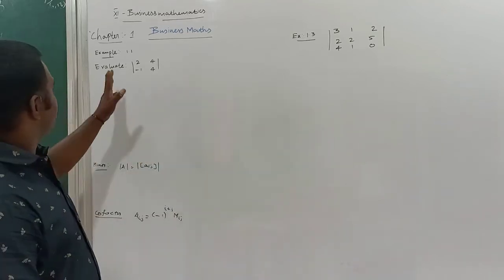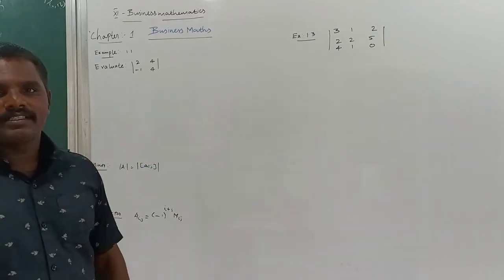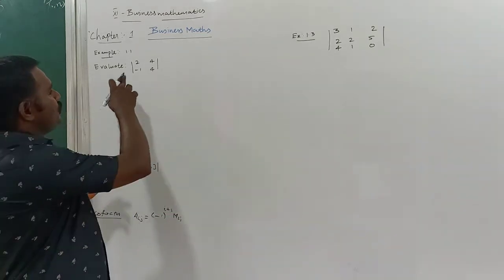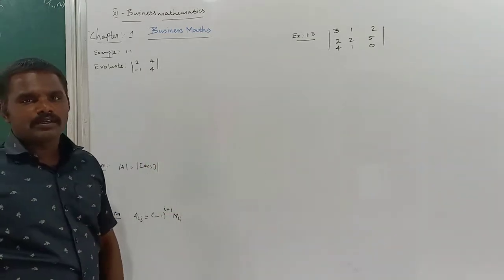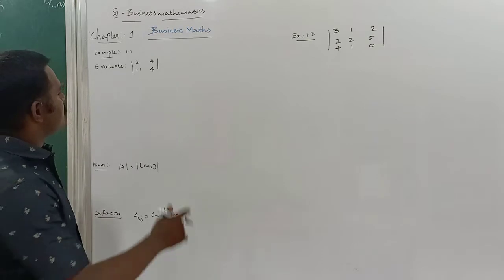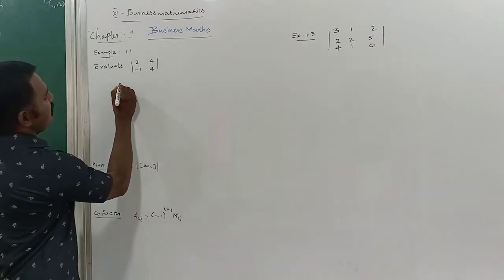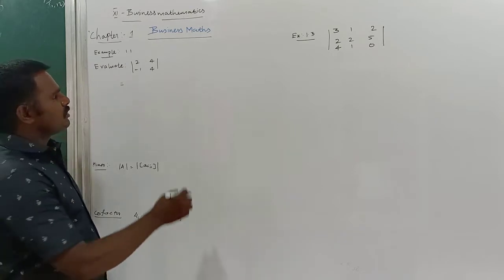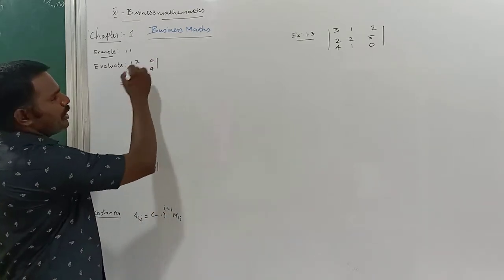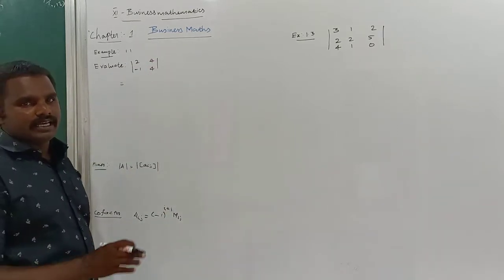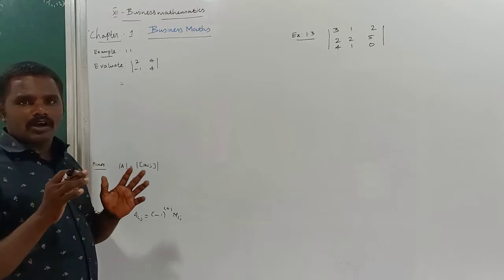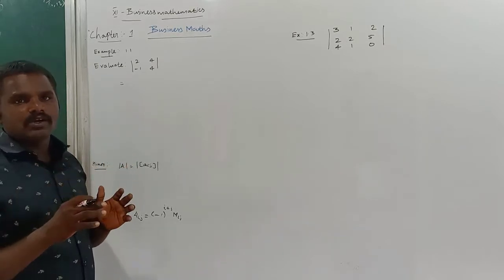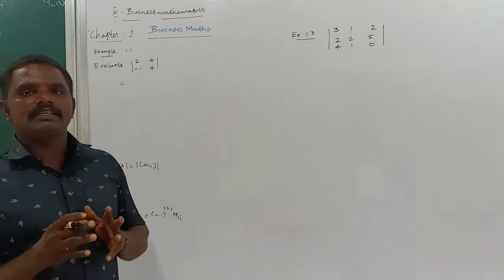First example: evaluate. Evaluate means you find out the value of the determinant. So we have the determinant with entries 2, 4, -1, 4. The number of rows and columns must be equal in a determinant — only then can you find its value. Otherwise it is not possible.